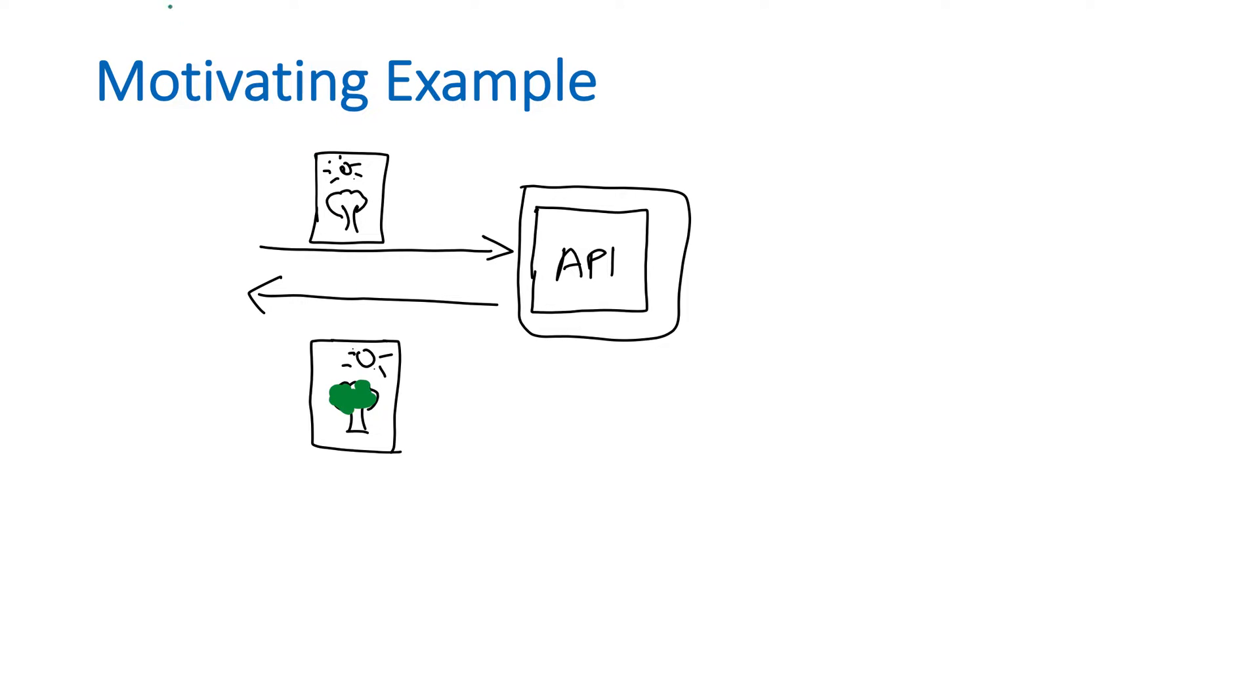It colors the trees as green and sun as yellow and so on. This is the request and this is the response. Suppose your API functions very well and people are liking the results and sharing it with others. Over time, more and more people want to use your service and you are charging some money for that service. After some time, your user base crosses a thousand users, then ten thousand.